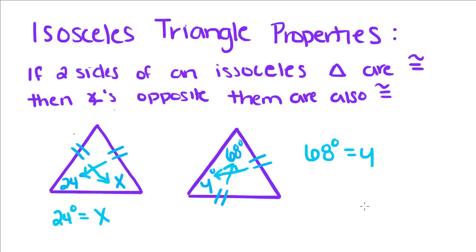And just if we wanted to, we could use our interior angles of a triangle property to find out what this equals. So 24 plus 24 plus z equals 180. 48 plus z equals 180. So z has to equal 132.